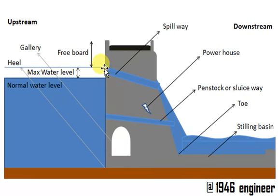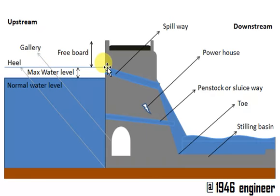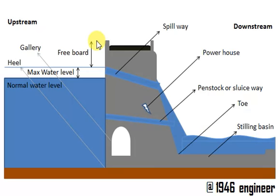Normally the bottom edge of the spillway will be at the normal water level, but at the time of floods this water level is raised and reaches the maximum water level. So this is the normal water level and this is the maximum water level. On the upstream side you have the heel of the dam, and on the downstream side you have the toe of the dam. You have the freeboard from the maximum water level to the crest of the dam.